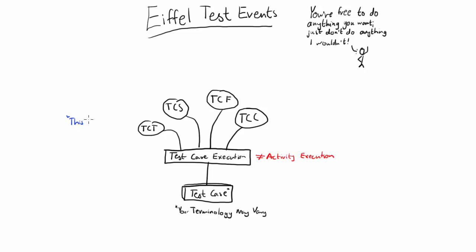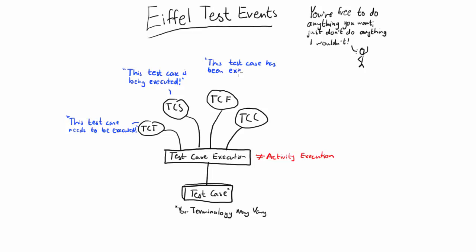Test case triggered means that the criteria for executing the test case have been met, which could mean that someone simply pushed the button, or that a new artifact version has been published, or that an artifact has achieved a certain confidence level due to other activities in the pipeline. Test case started signals that the execution has actually started, with any time delta between the two implying some delay, for example due to queuing. Test case finished is sent when the execution is complete and reports the outcome. Test case cancelled is used when the triggered test case execution was halted before it could begin, and can also report the reason for cancelling.